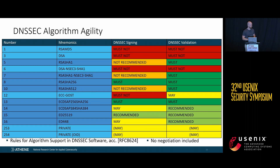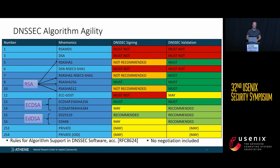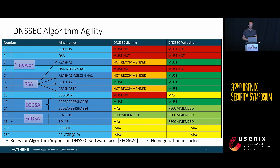How does DNSSEC algorithm agility look? The specification allows the use of several algorithms — for instance, RSA-based ones, ECDSA-based ones, and EdDSA-based ones. As a rule of thumb, the higher the algorithm number, the newer it is and the more recently it has been standardized.